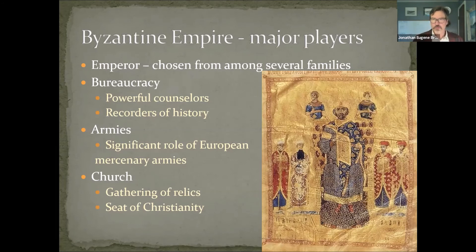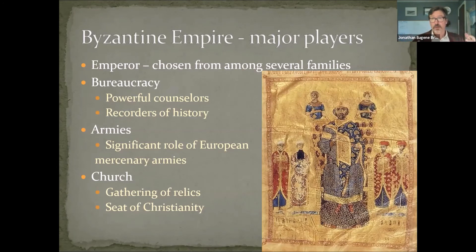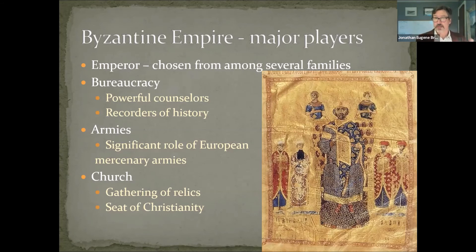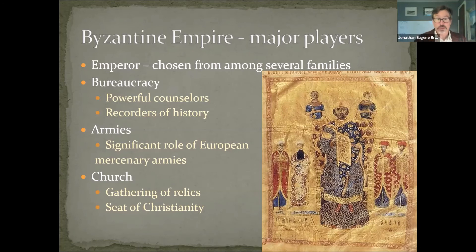Constantinople was not one of the original cities of Christianity, so to raise its importance, the emperor started gathering relics — things associated with the life of Jesus, such as a piece of the true cross, the crown of thorns, the burial cloak, and many other things besides, including bones, teeth, hair, and even the reported milk of Mary's mother and various saints connected to the life of Jesus. This gathering of relics in the city made the city itself holy, in a sense.